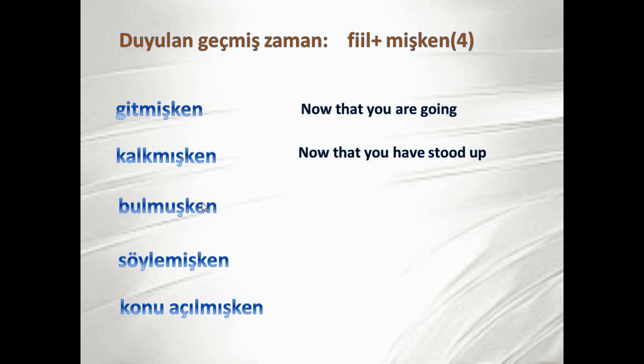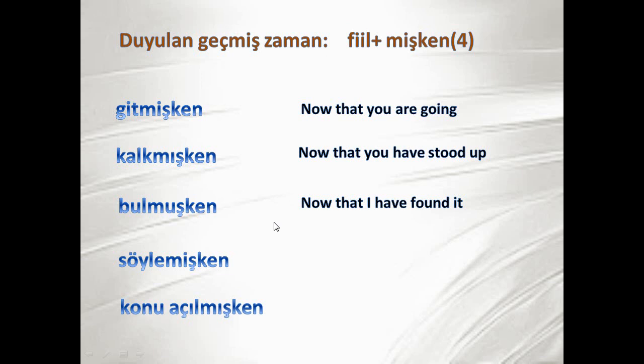The next category: verb plus -mışken. Gitmişken — now that you are going. Kalkmışken — now that you have stood up. Bulmuşken — now that you have found it. The subject is not specified here; it can be inferred from the sentence context. Söylemişken — now that we have said the point. Konu açılmışken — now that we are talking about the topic.